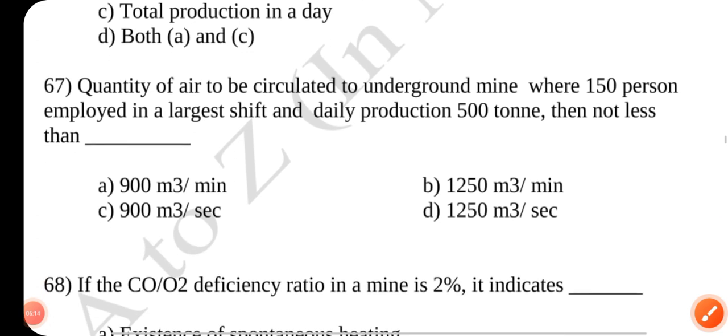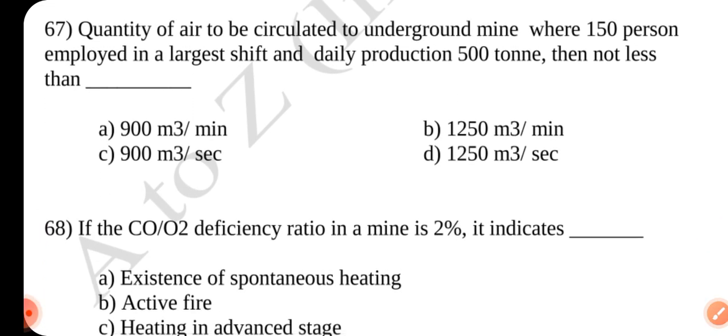Question number 67. The quantity of air to be circulated to an underground mine where 50 workers are employed in the largest shift and daily production 500 metric ton, then not less than dash. Answer is B. 1250 cubic meter per minute.